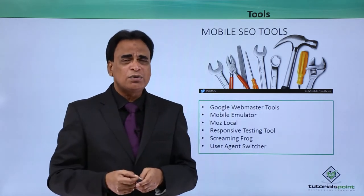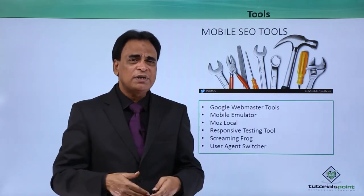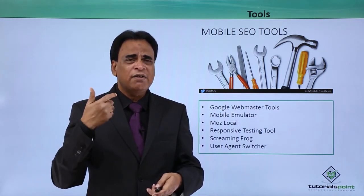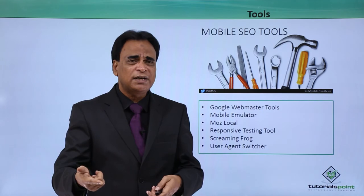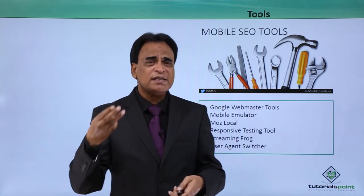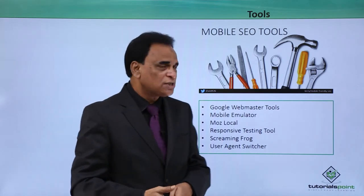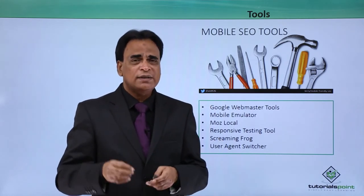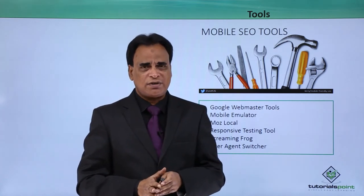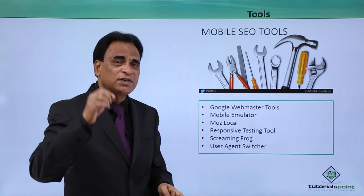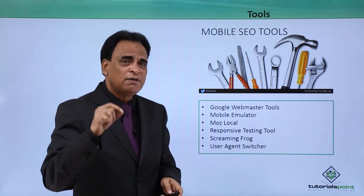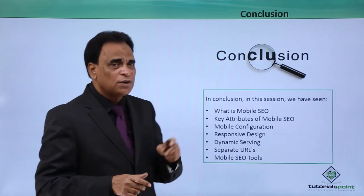Screaming Frog is another very good downloadable tool. You can download it on your system and cross-check the number of pages on the site, external links, internal links, keywords, titles, and whether meta tags are properly aligned. User Agent Switcher is a very good tool that helps you understand whether your site is consistent across all search engines. These are some of the tools you can use when making your website available for smartphones and ensuring responsiveness.